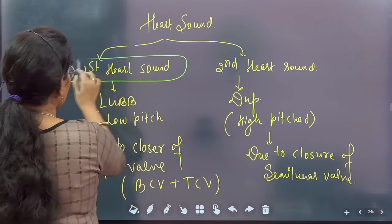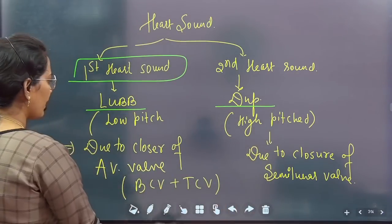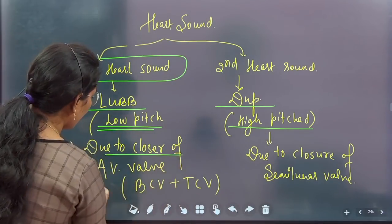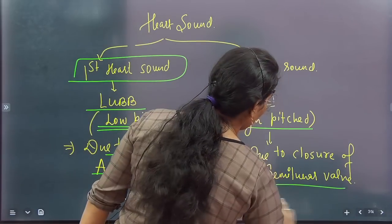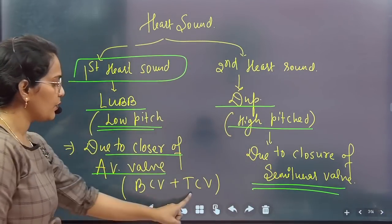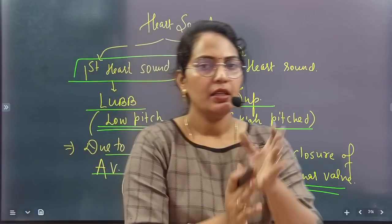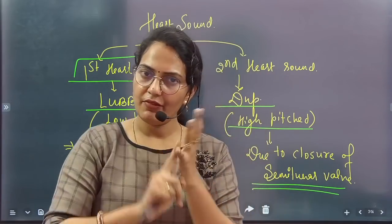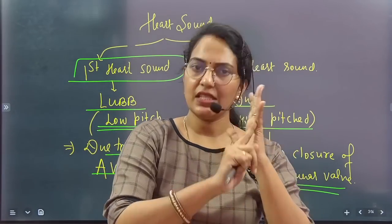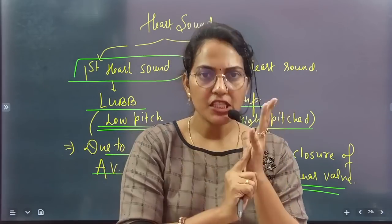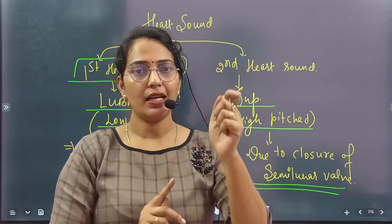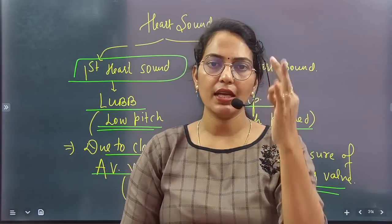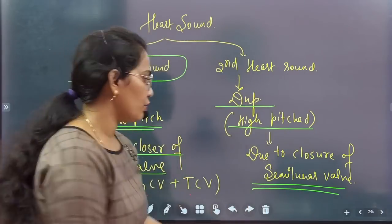Heart sounds: there are two heart sounds — one is 'lub' and one is 'dup'. Lub is low pitch and dup is high pitch. Lub is produced due to closure of the AV valve (bicuspid or tricuspid valve), and dup is due to closure of the semilunar valve. To remember: A is for April — first — so the first heart sound (lub) is due to the AV valve closure. Second — S for second, S for semilunar valve — so the second heart sound (dup) is due to semilunar valve closure.